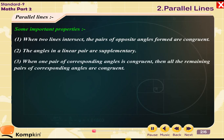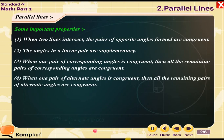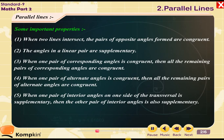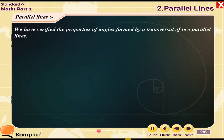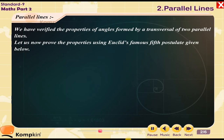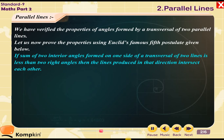3. When one pair of corresponding angles is congruent, then all the remaining pairs of corresponding angles are congruent. 4. When one pair of alternate angles is congruent, then all the remaining pairs of alternate angles are congruent. 5. When one pair of interior angles on one side of the transversal is supplementary, then the other pair of interior angles is also supplementary. 6. We have verified the properties of angles formed by a transversal of two parallel lines. Let us now prove the properties using Euclid's famous 5th postulate: If the sum of two interior angles formed on one side of a transversal of two lines is less than two right angles, then the lines produced in that direction intersect each other.